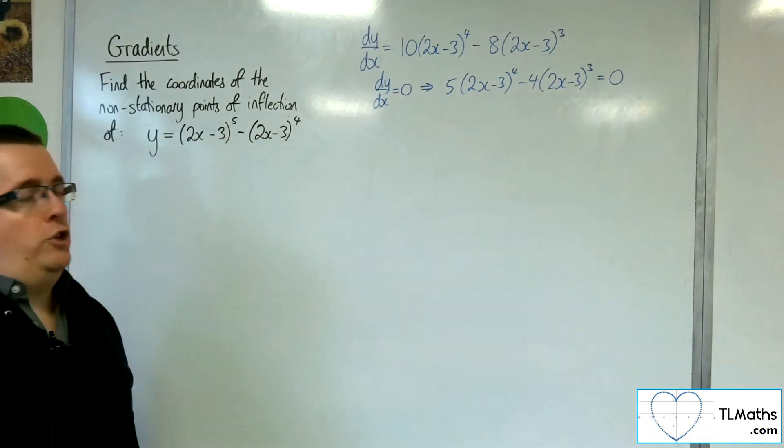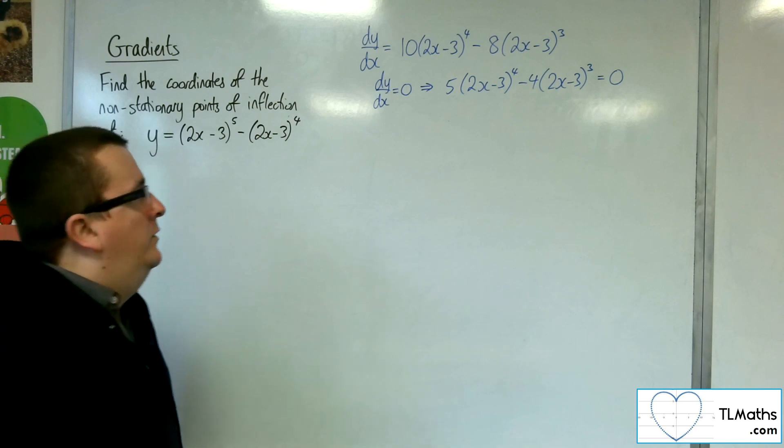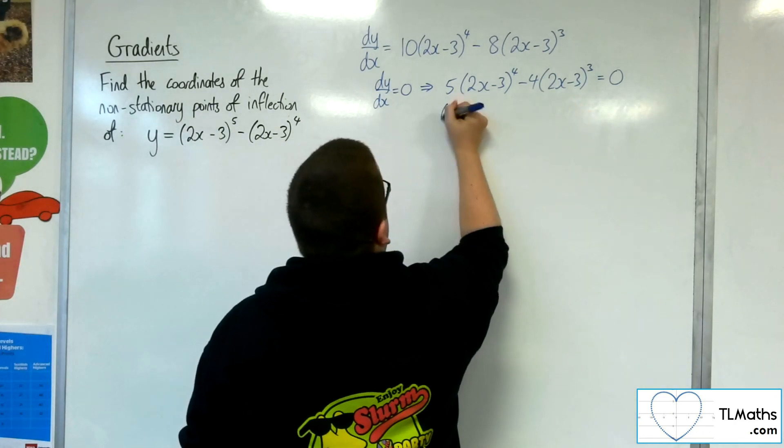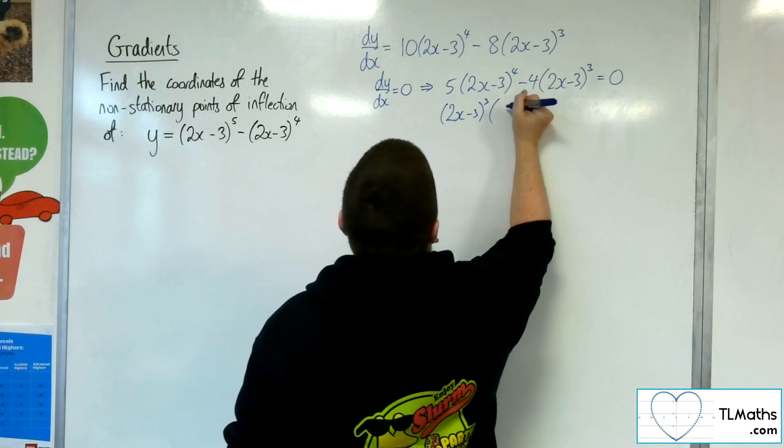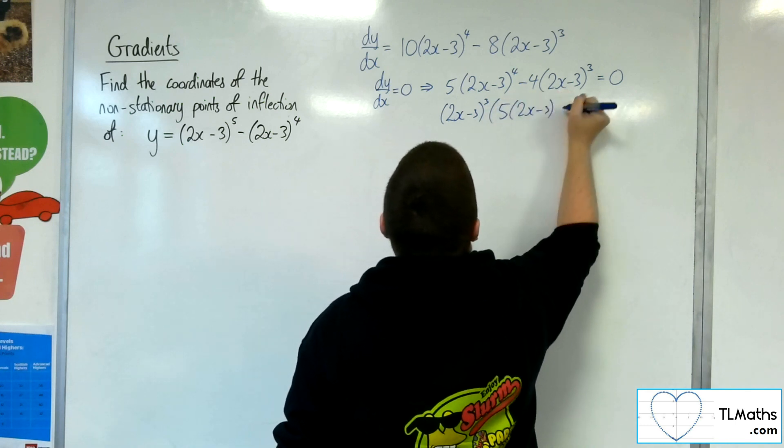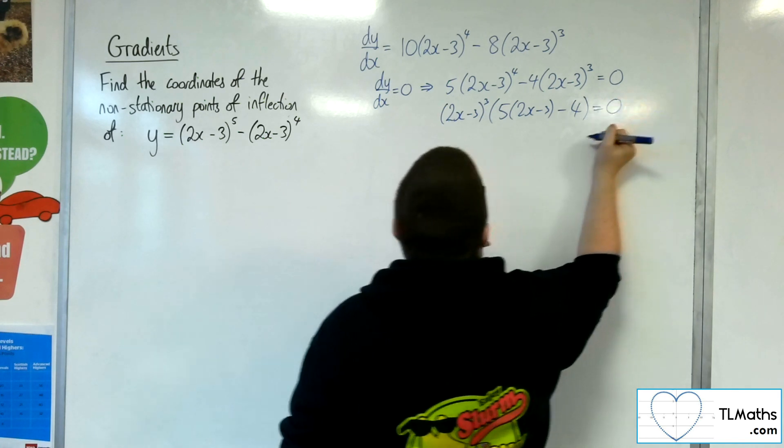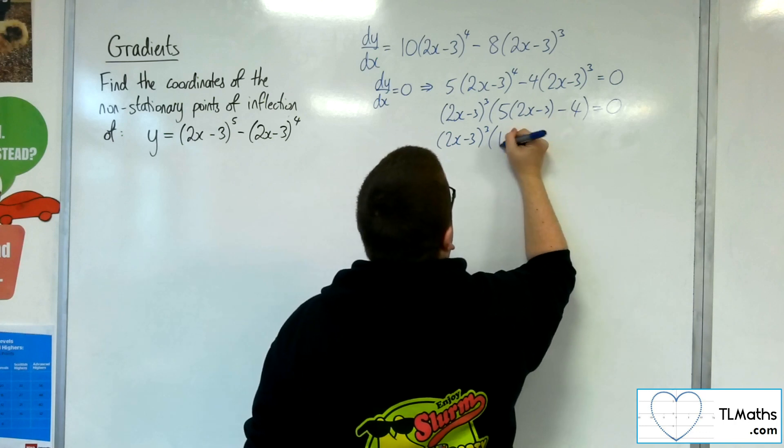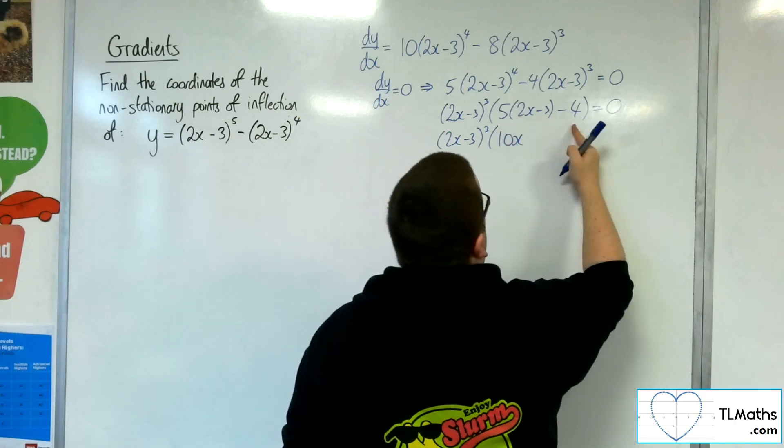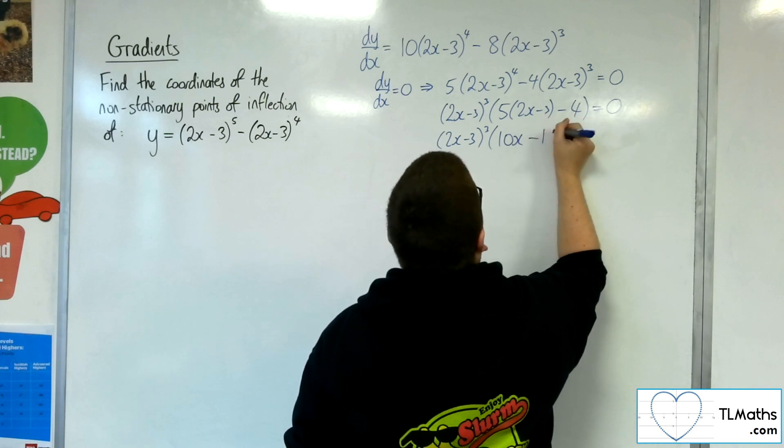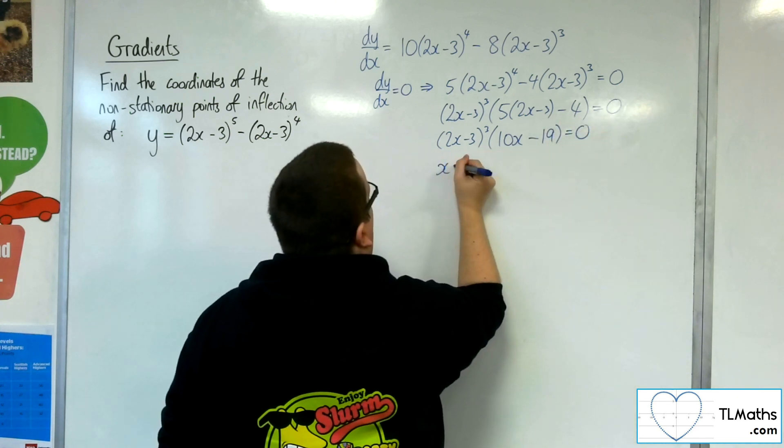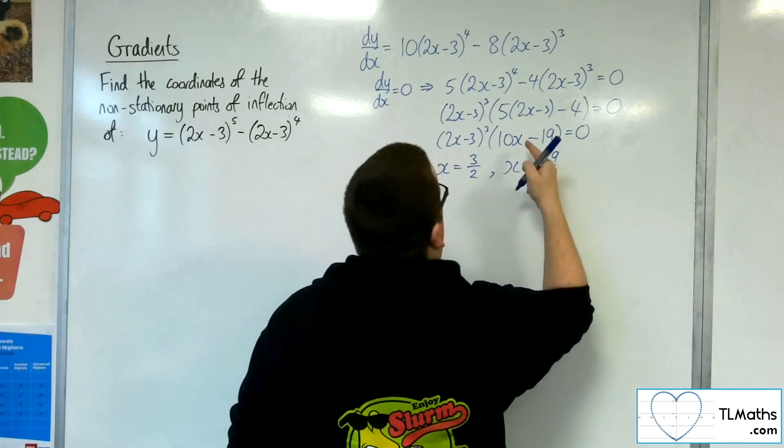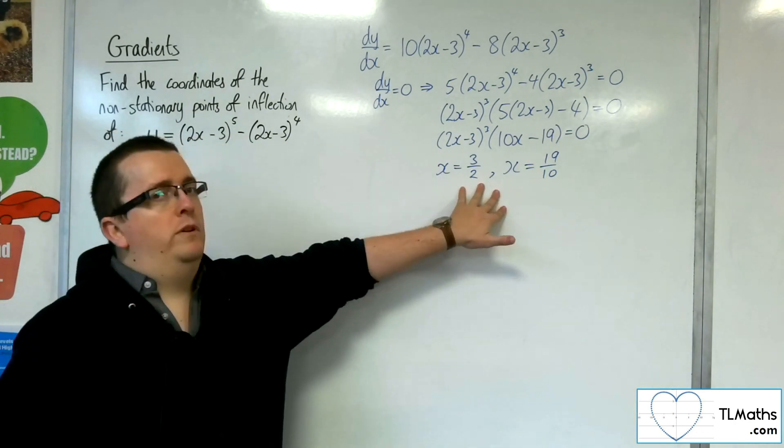I would show an extra line of working if I was doing this in the exam. So I'm going to factor out the 2x minus 3 cubed, and I'd be left with 5 lots of 2x minus 3 takeaway 4 is 0. So I've got 2x minus 3 cubed, and I've got 10x, and I've got minus 15 takeaway 4, so minus 19 is 0. And so x is either 3 halves from that bracket, or x is 19 tenths from that bracket. They are the two stationary points.